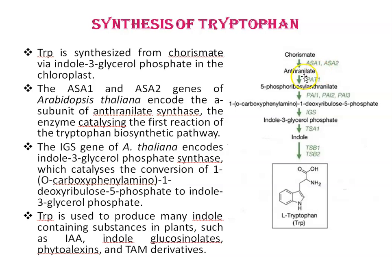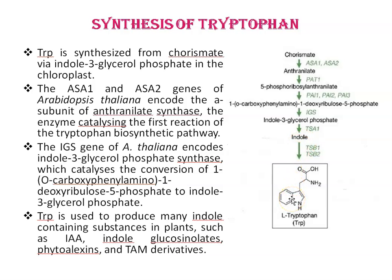Anthranilate is formed first, and then 5-phosphoribosylanthranilate is formed by the PAT1 gene. The next compound, 1-O-carboxyphenylamino-1-deoxyribulose-5-phosphate, is formed by PAI1, PAI2, and PAI3 genes. The IGS gene of Arabidopsis thaliana encodes indole-3-glycerol phosphate synthase, which catalyzes the conversion of that compound to indole-3-glycerol phosphate. From indole-3-glycerol phosphate, indole is formed by the TSA1 gene, and ultimately tryptophan is formed by the TSB1 and TSB2 genes.